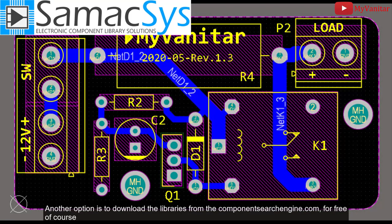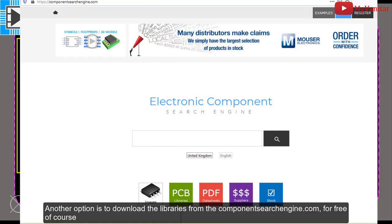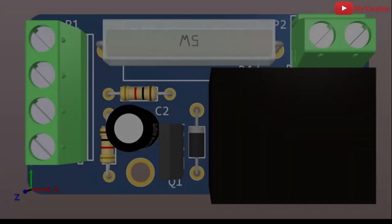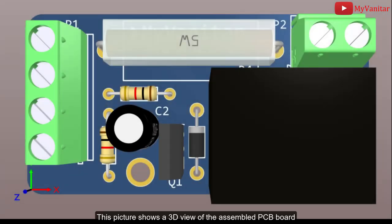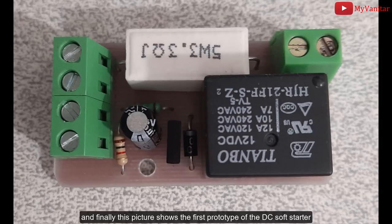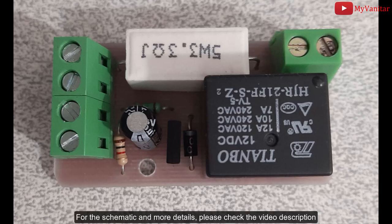CAD plugin. Another option is to download the libraries from componentsearchengine.com for free, of course. This picture shows a 3D view of the assembled PCB board. And finally, this picture shows the first prototype of the DC soft starter. For the schematic and more details, please check the video description.